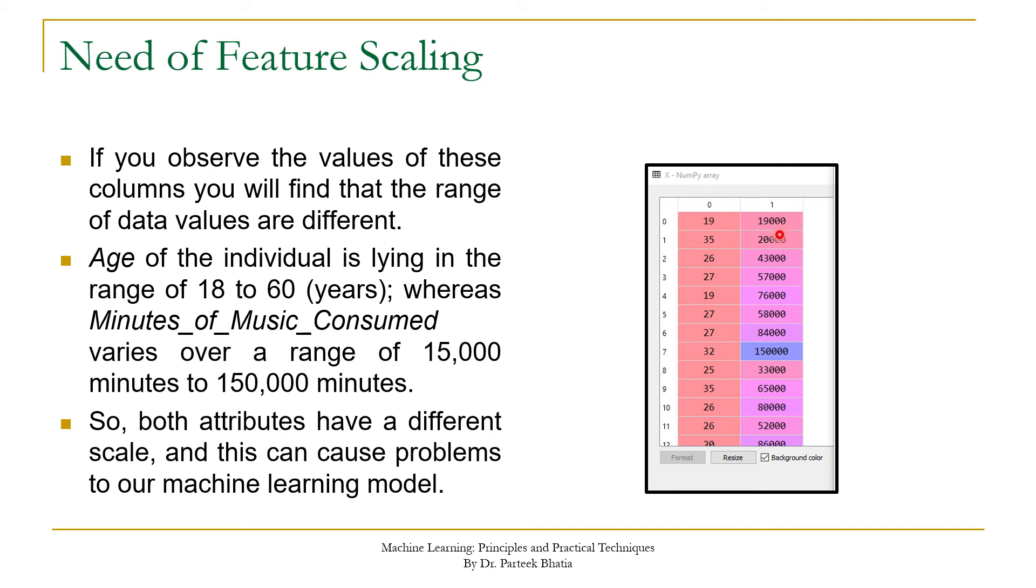We can understand that the values of the first column are very very small as compared to values in the second column. Since machine learning models are based on statistical data, the second column will get more biased as compared to first column because its values are in higher range.